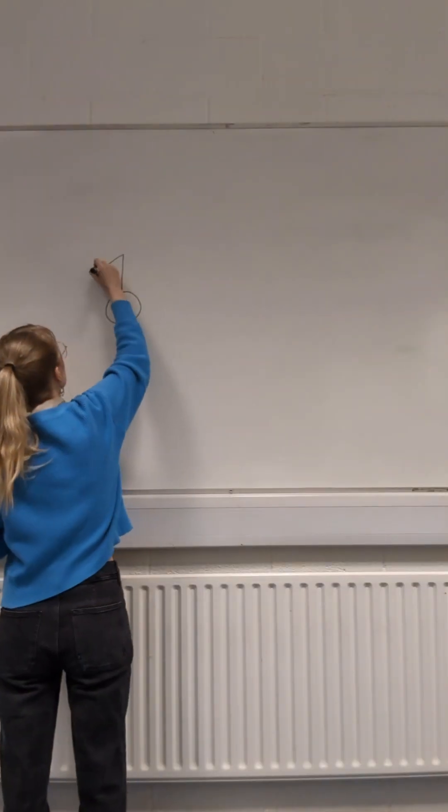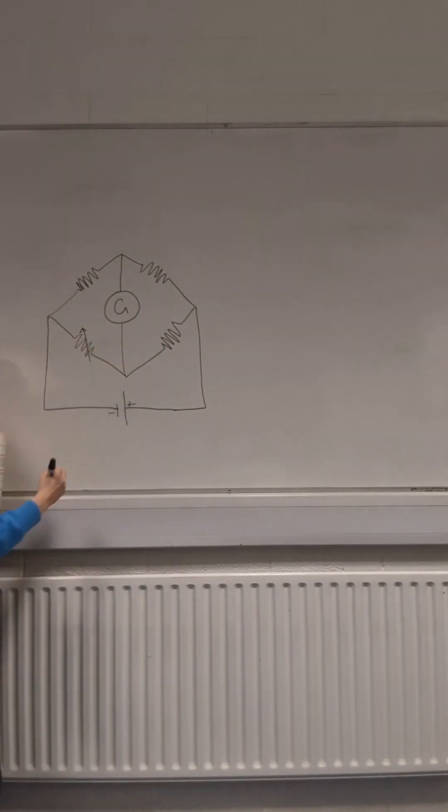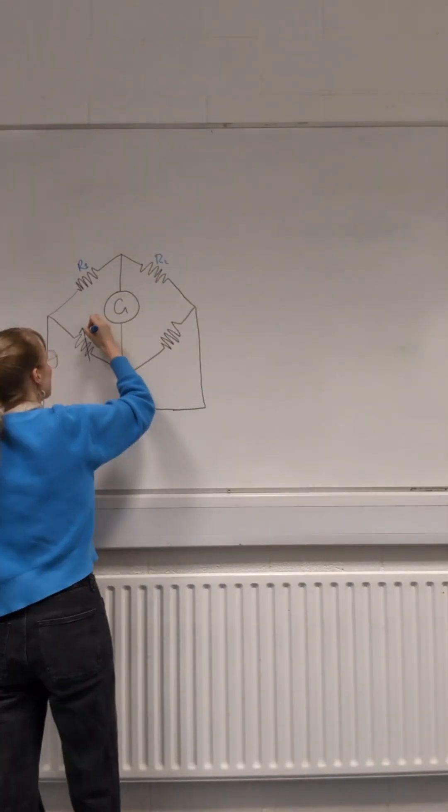We need to find what the resistance of a resistor is, and we don't have a voltmeter. But we do have two resistors we know and a variable resistor, and we construct this circuit. There's a galvanometer in the middle, and the purpose behind this is to balance the variable resistor until the point there is no current passing through.